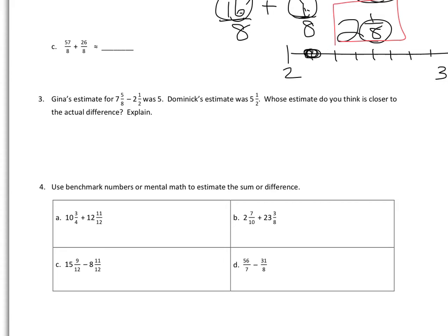For part three, there's a word problem where Sheena estimates 7 and 5 eighths subtract 2 and a half was 5, and Dominic estimated it to be 5 and a half. Whose estimate do you think is closer to the actual difference? Students should do some estimating on their own and think about why one would be closer to the other.